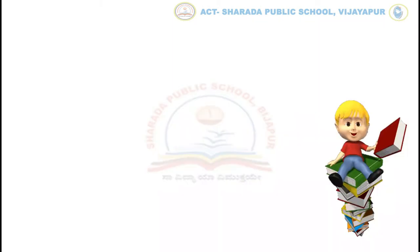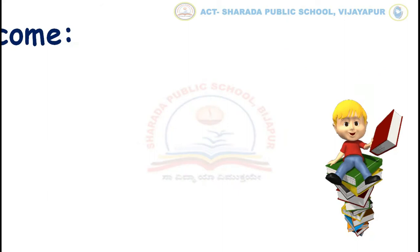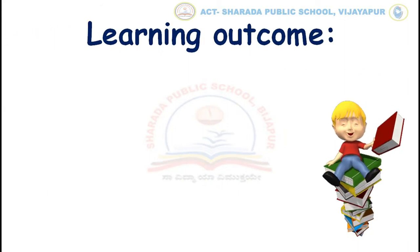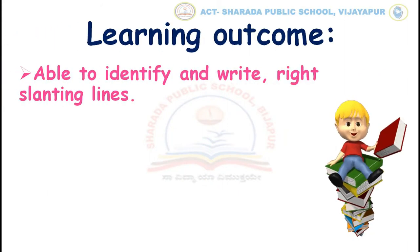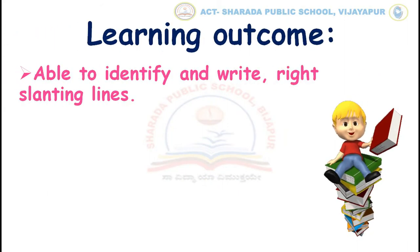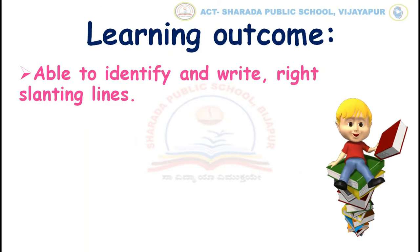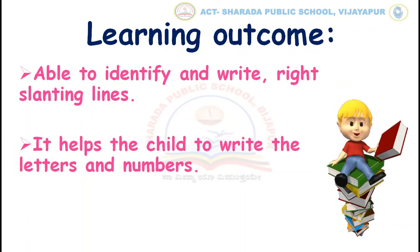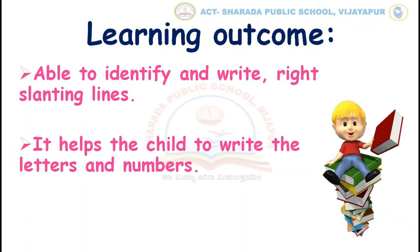The learning outcome of right slanting line is: children will be able to identify and write right slanting line, and it helps the child to write the letters and numbers.